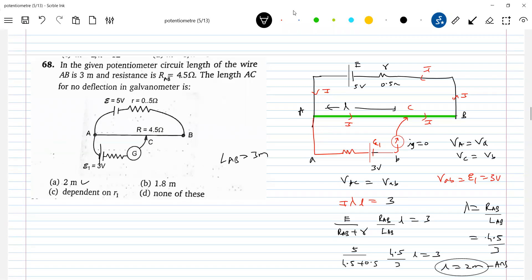And now, if I make AC equal to 1.5 meter, tell me what direction the current will flow.